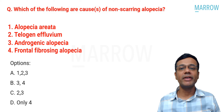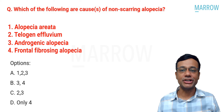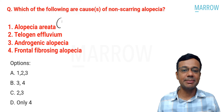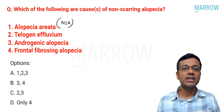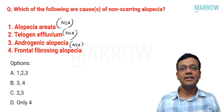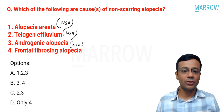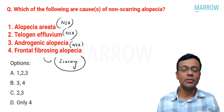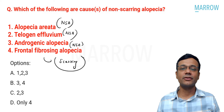Next, two questions from appendages and disorders. Which of the following are causes of non-scarring alopecia? Alopecia areata — yes, non-scarring. Telogen effluvium — yes, also non-scarring. Androgenetic alopecia — also non-scarring. Frontal fibrosing alopecia — the word 'fibrosing' tells you there is scarring, so this cannot be the answer. Therefore options one, two, and three are all causes of non-scarring alopecia. The correct answer is option A.